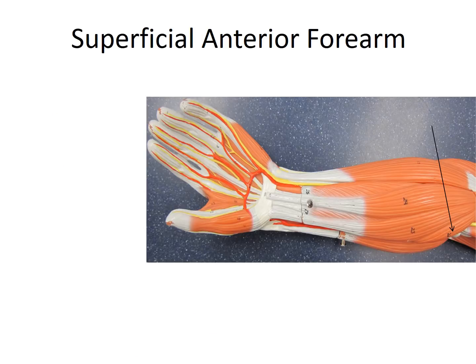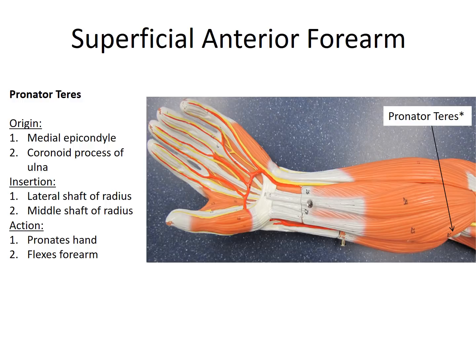Now we're looking at the superficial anterior forearm. The first muscle indicated by the arrow is the pronator teres — we need to know origin, insertion, and action. For the origin, there are two: the medial epicondyle of the humerus or the coronoid process of the ulna — just pick one and stick with it. There are two insertions as well: the lateral shaft or the middle shaft of the radius. The action is it pronates the hand and also flexes the forearm. Note that extensors originate on the lateral epicondyle, while this flexor/pronator originates on the medial epicondyle — an important pattern.